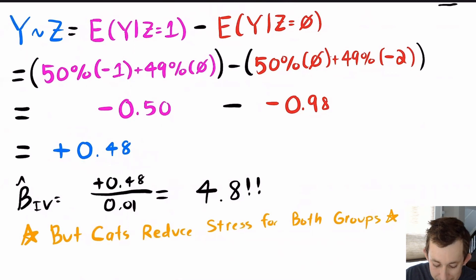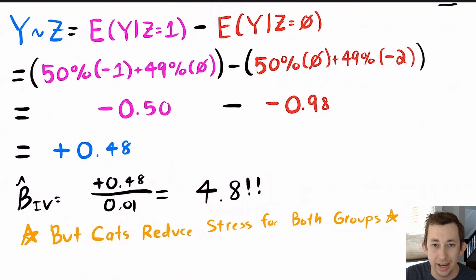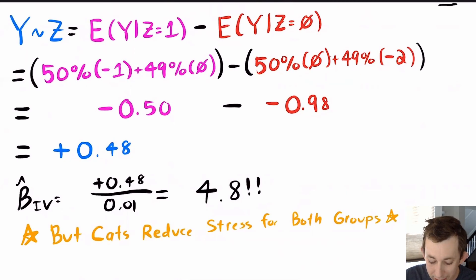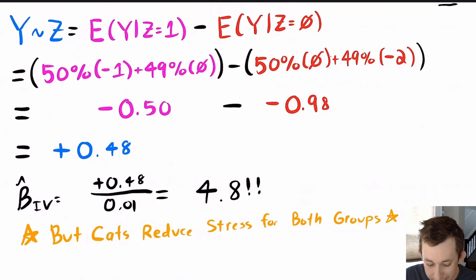When I divide the effect of Z on Y by the effect of Z on X, I get 4.8 — even though both groups had a negative average treatment effect. Defiers can flip your treatment effect from negative to positive. The more defiers you have, the further your IV estimate is from the true treatment effect. This is why we have the no-defiers assumption: with defiers, you get a severely distorted IV estimate.